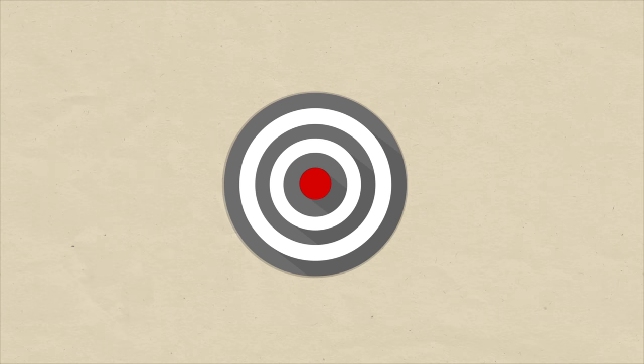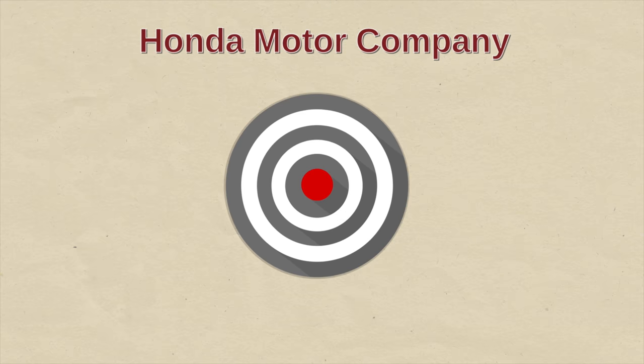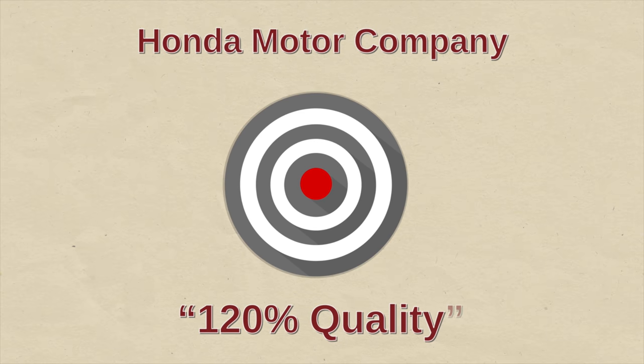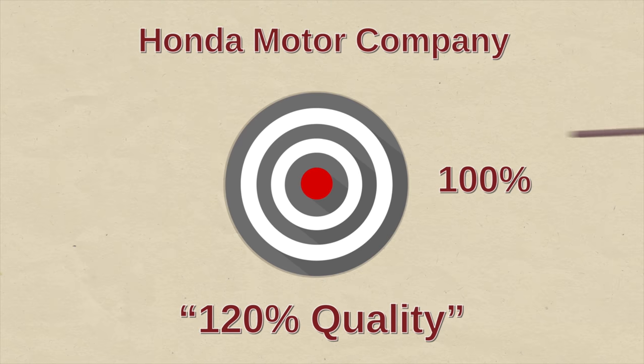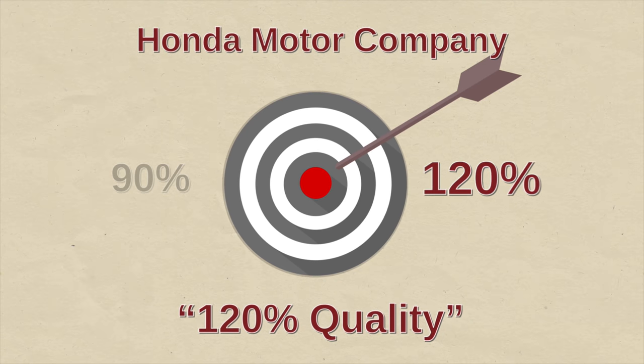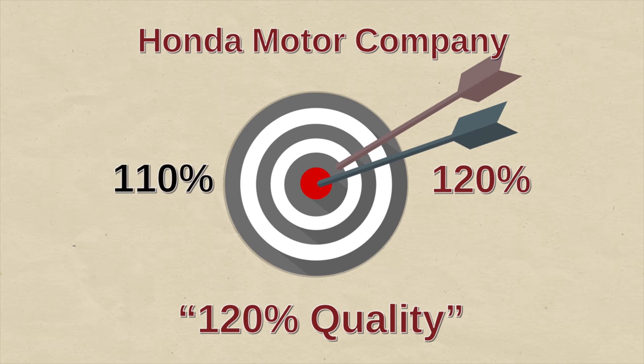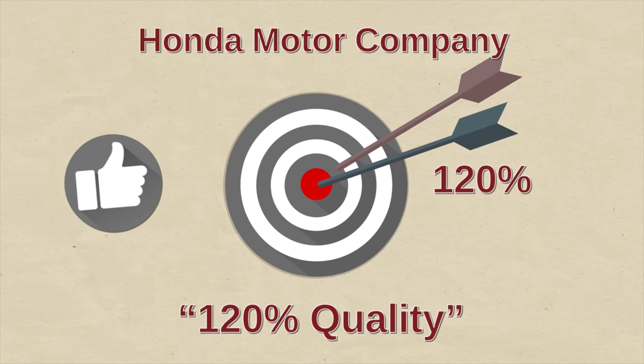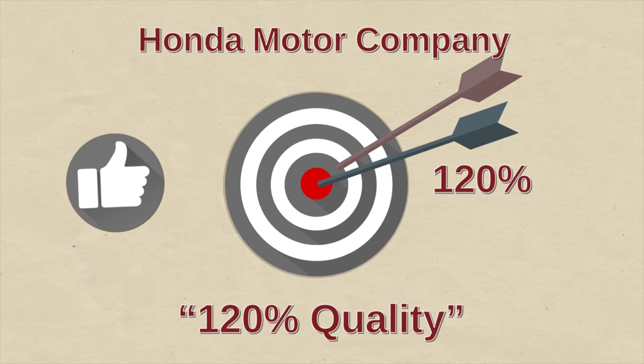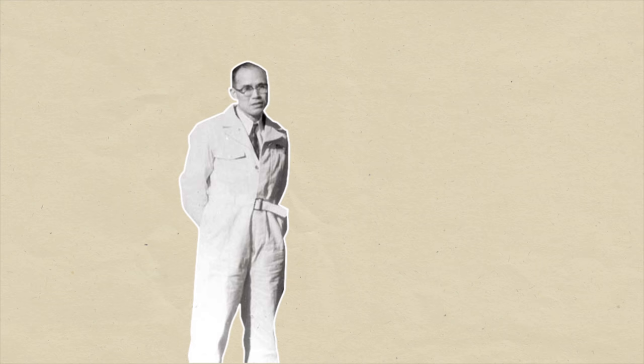So how does this company move so fast? Perhaps we can find a clue in the company's slogan, which is 120% quality. The idea is that if you aim for 100%, you will always miss. But if you aim at 120%, you can achieve perfection. It's an idea that is not conventional. Conventional wisdom says 100% is the best you can do. But Soichiro is not conventional.